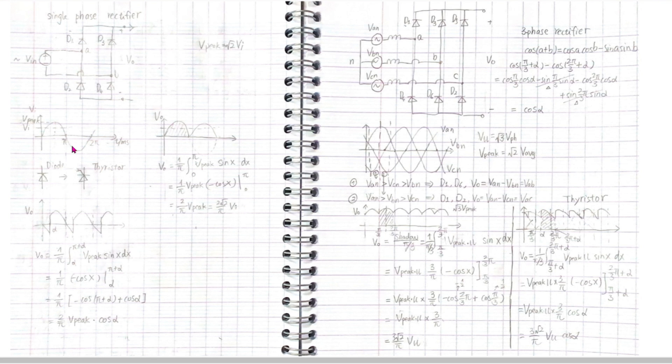The output is the opposite of the input. The average value is just the integral for sine wave from alpha to pi plus alpha over pi. It's the 2 over pi V peak cos alpha.